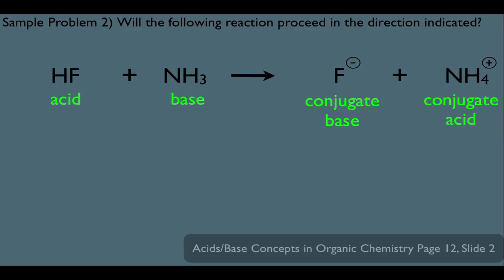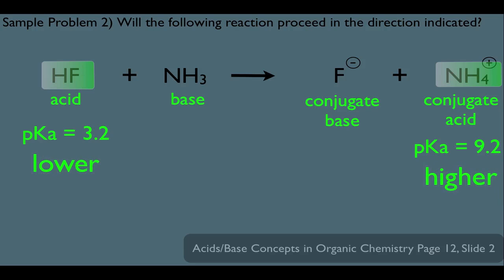Now we know the two things to compare: the acid on the left to the conjugate acid on the right. If we looked up their corresponding pKa values, we would notice that HF has a pKa of 3.2, and NH4+ has a pKa of 9.2. Notice, from left to right, you are going from a lower pKa to a higher pKa. That means this reaction will proceed in the direction as indicated.